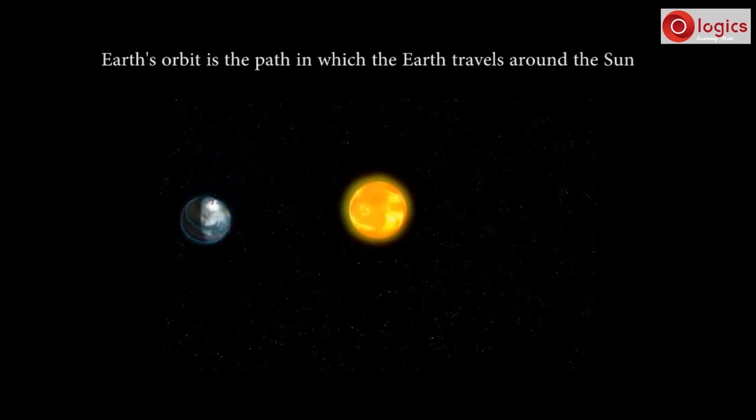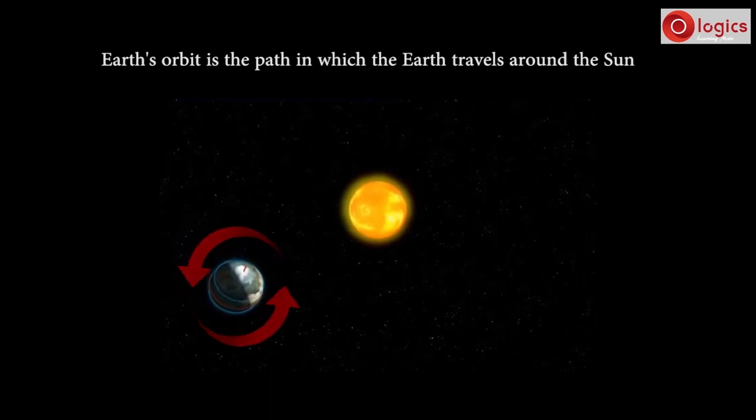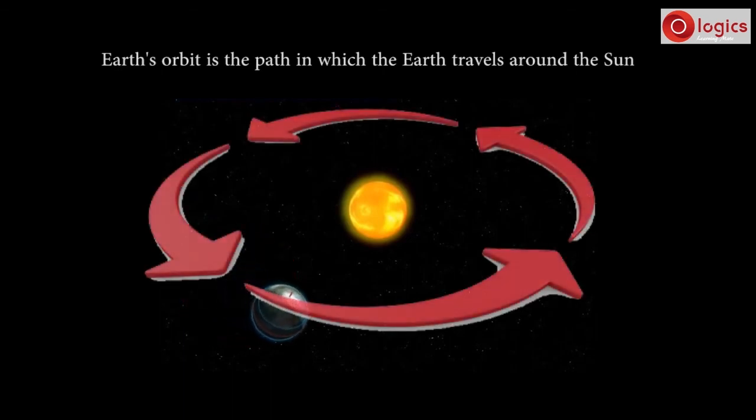Here you can understand, Earth rotates on its axis and also travels around the Sun in its orbit.